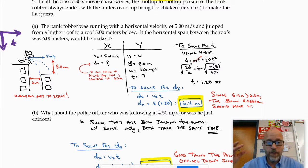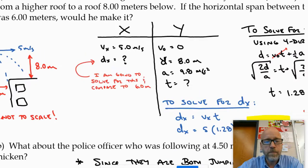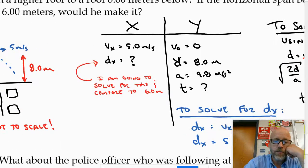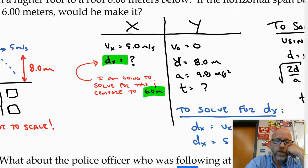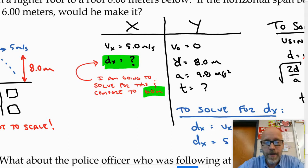If the horizontal span between the roofs was 6 meters—that's over 19 feet—would he make it? Let's look at what I did. I did not plug in the 6 meters for the horizontal displacement.